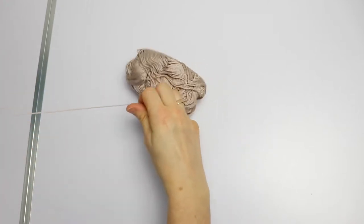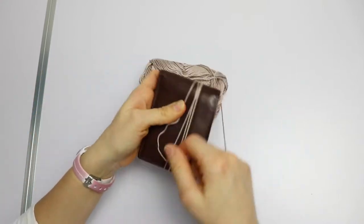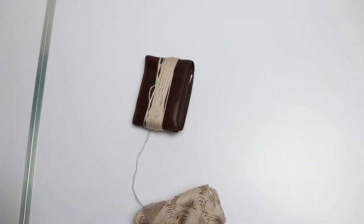Let's start with making a tassel. I am using a wallet as a guide but you can use whatever you want. I wrap the yarn approximately 30 times.